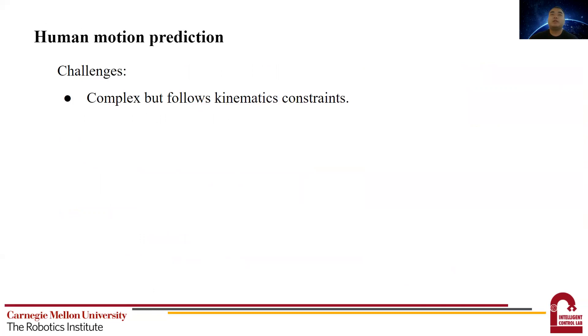As we all know, there are many challenges in human motion prediction. First, human motion is complex in nature, but it is also simple in the sense that the relative motion between joints strictly follows the kinematic constraints.